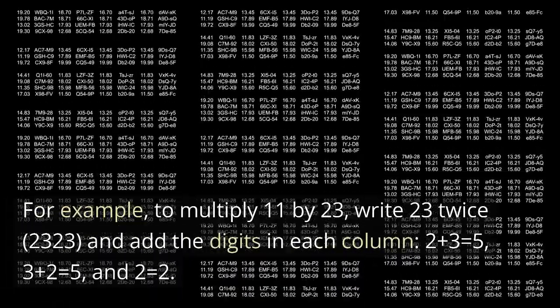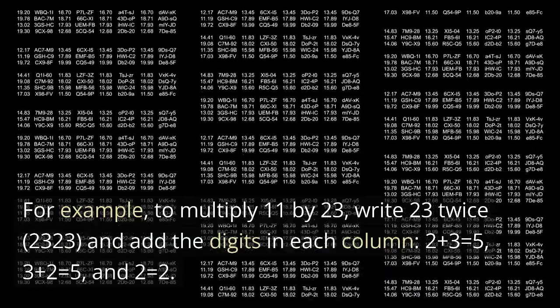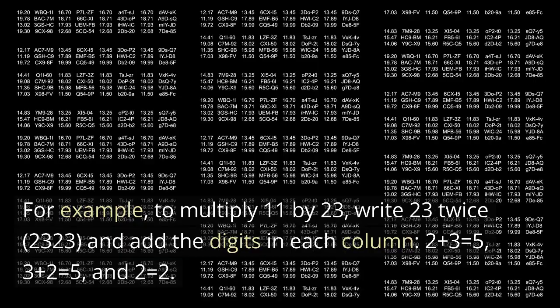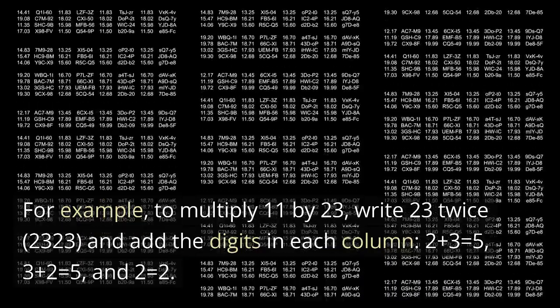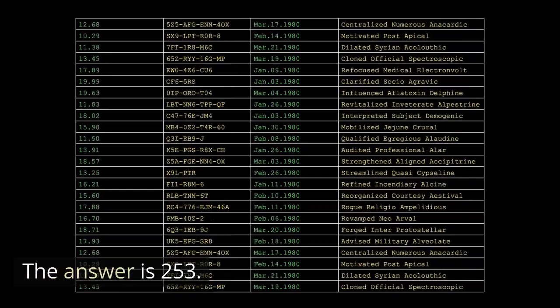For example, to multiply 11 by 23, write 23 twice, 2323, and add the digits in each column. 2 plus 3 equals 5, 3 plus 2 equals 5, and 2 equals 2. The answer is 253.